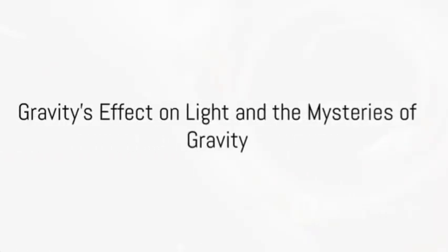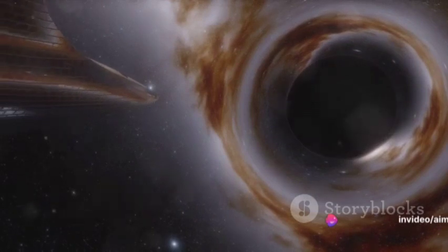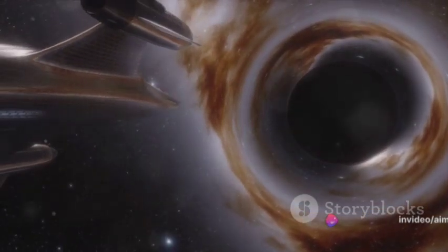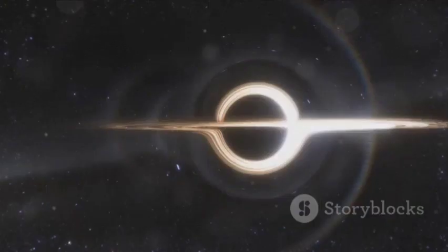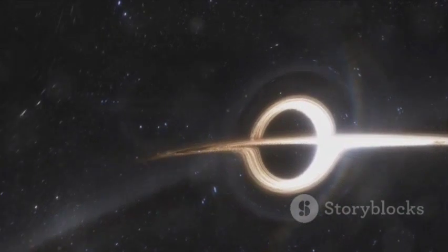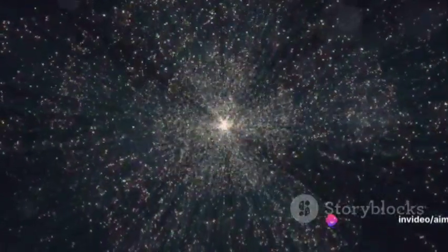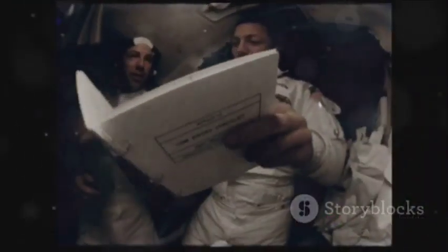Gravity's reach even extends to something as intangible as light. Picture this: a massive object like a galaxy acting as a cosmic lens, bending and distorting the light that passes near it. This is gravitational lensing, a captivating display of gravity's influence. The light from distant stars and galaxies is deflected, resulting in fascinating and sometimes surreal cosmic mirages.